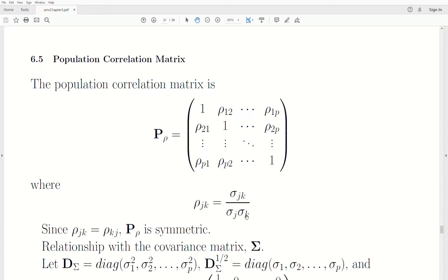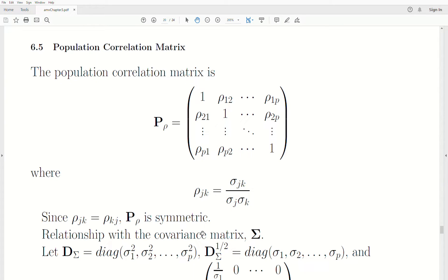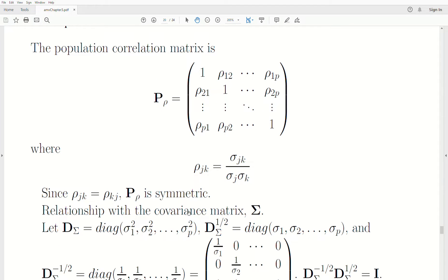The off-diagonals are equal. So row 2,1 is the same as row 1,2, and so on. So it's a symmetric matrix. The relationship with the covariance matrix, sigma.